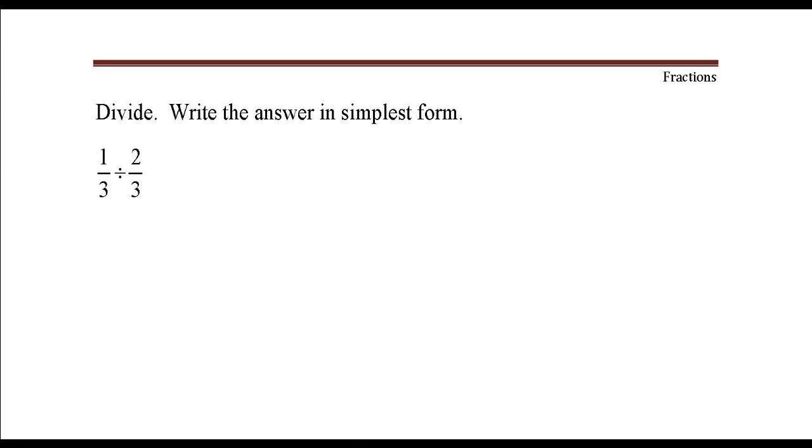I'm going to make this problem easier by changing this division problem into multiplication. So one-third divided by two-thirds is the same thing as one-third times the reciprocal of two-thirds, that would be three-halves.